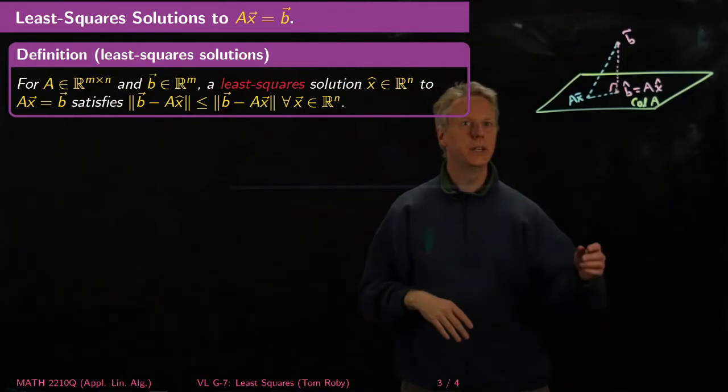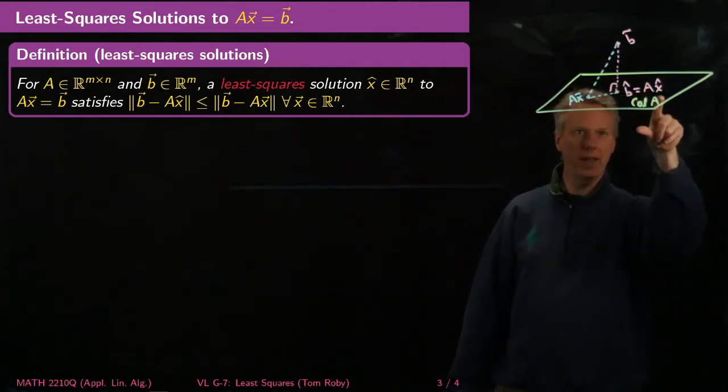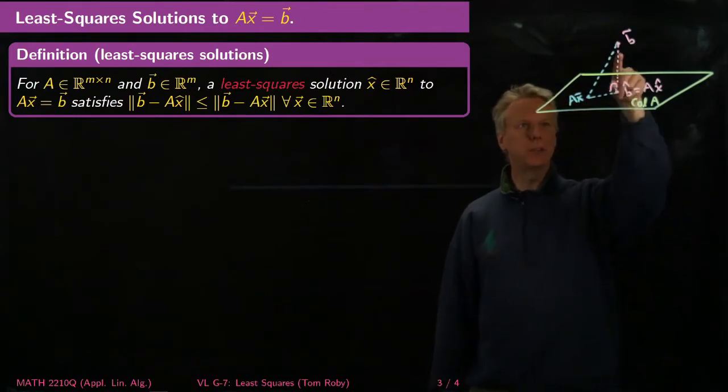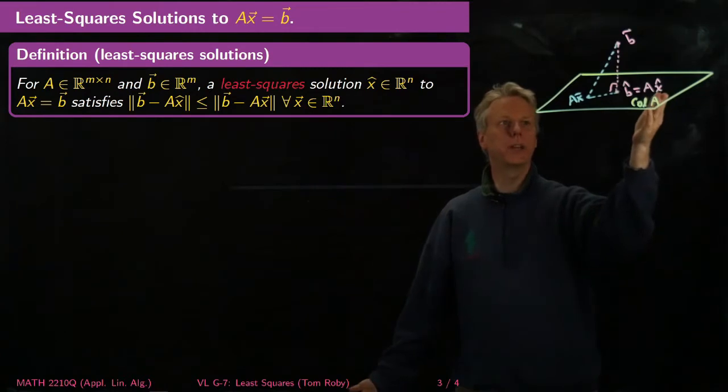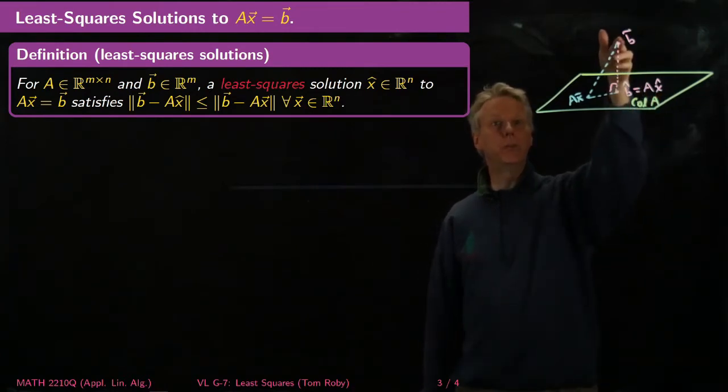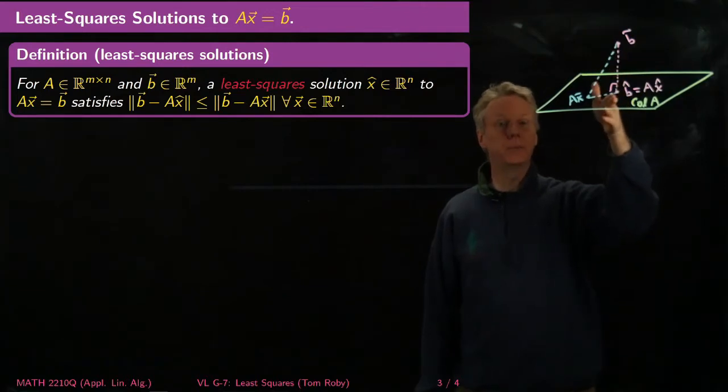So the idea is, here's this green plane, which is the column space of A. The column space of A is everything that I can get to by applying A to X. So that's the only places I can go. But then I want to get to B, which is out here.